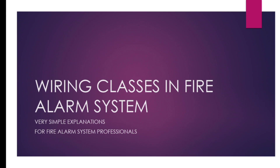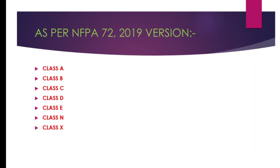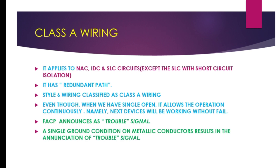Hi guys, in this video I'm going to teach you the types of wiring in parallel systems as per NFPA 72 2019. In a quick overview, we have Class A, B, Z, D, E, N, and X types of wiring. You must watch this video if you want to know the styles of wiring in fire alarm systems, so please watch till the end.